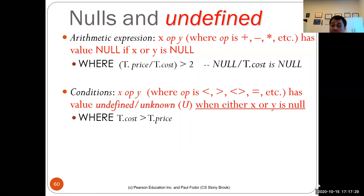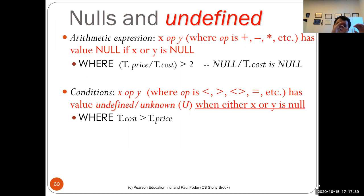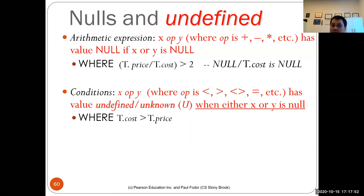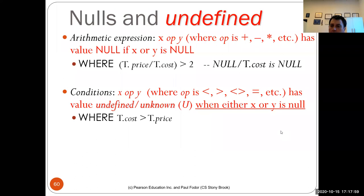There are other instances where you have issues with null. If you select the sum of two attributes in the projection part and one is null, you will also get null as part of the resulting tuples. Undefined and unknown mean the same thing — undefined is the word used in the SQL standard.